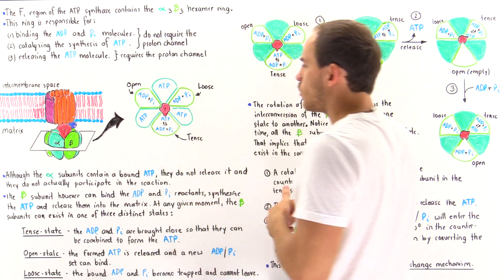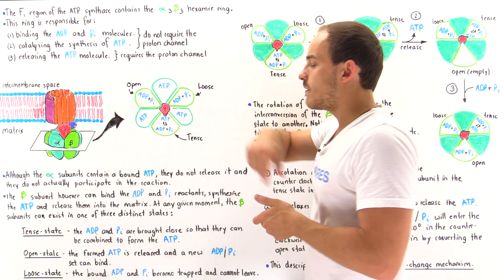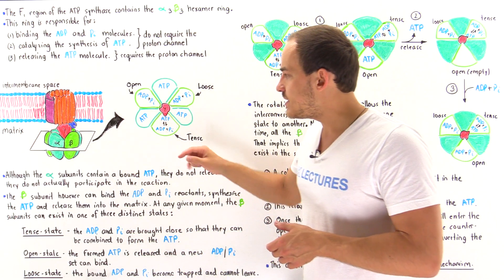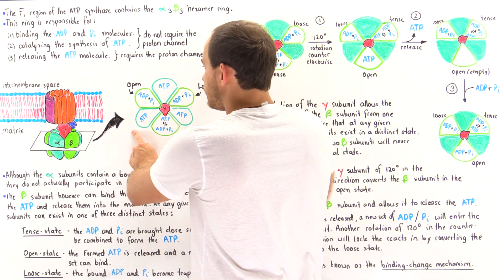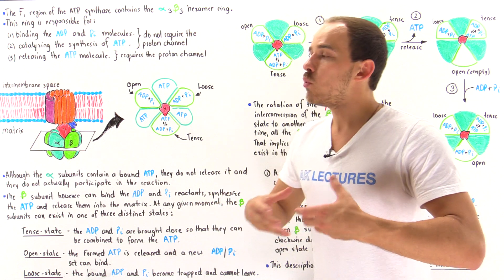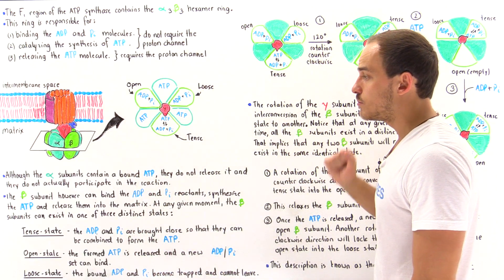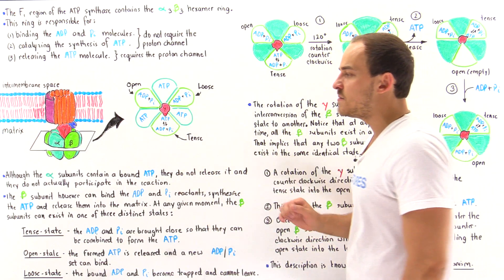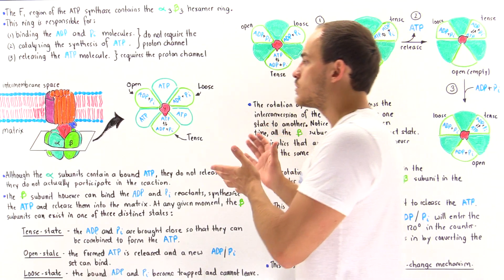The alpha subunits, although part of the hexamer ring, don't actually play a catalytic role. Even though they can bind ATP molecules and will have ATP bound to them, they will not release those ATP molecules nor carry out any useful catalytic process.